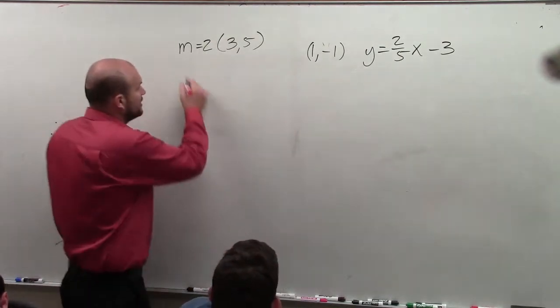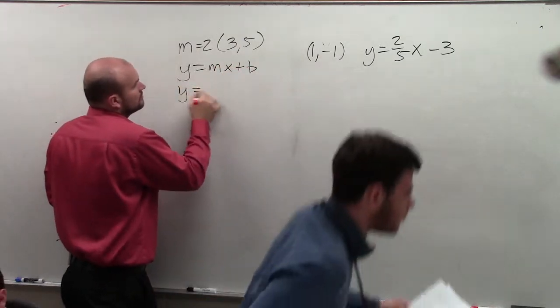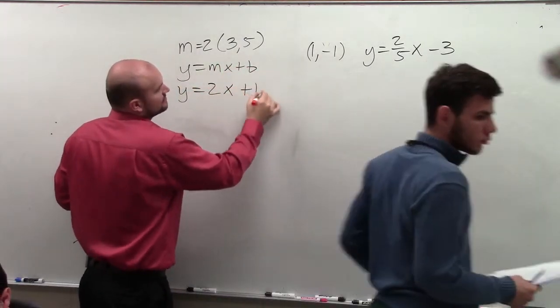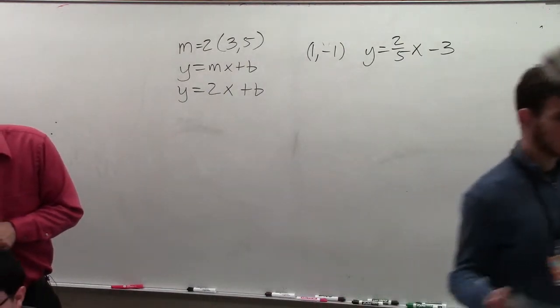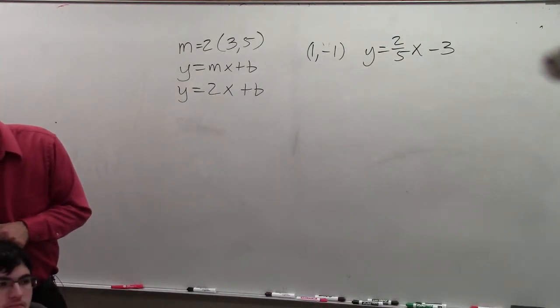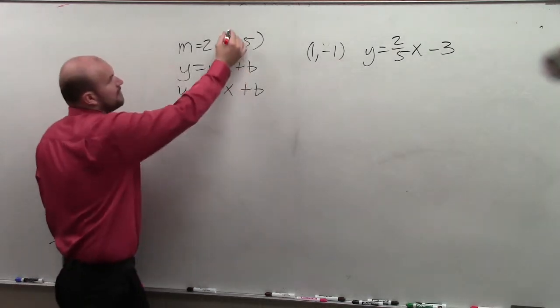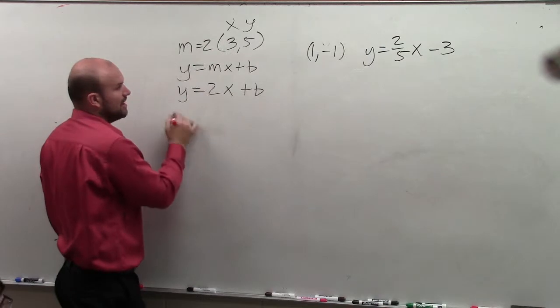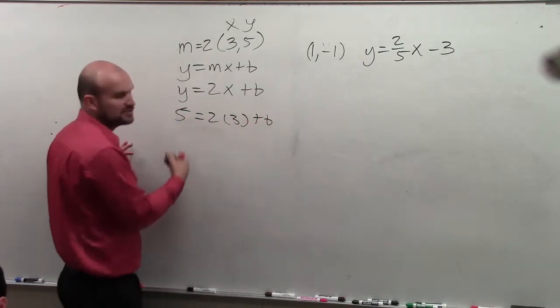Okay, so all you did is wrote y equals mx plus b. Then what we did was we plugged in x and y. 5 equals 2 times 3 plus b. And then you solve for b, right?